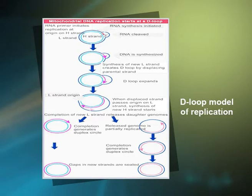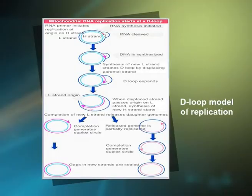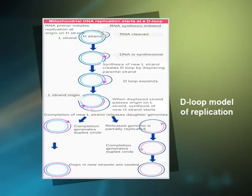The origin of replication is at a different point on each of the two parental template strands. Replication begins on one strand, displacing the other while forming a displacement loop or D-loop structure. Replication continues until the process passes the origin of replication on the other strand. The newly synthesized strand is known as the leading strand. Replication is then initiated on the second strand in the opposite direction, which is the lagging strand. When the leading strand is completely replicated, only one-third of the lagging strand is replicated.